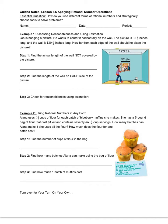Our first example, we're going to look at assessing reasonableness and using estimation. John is hanging a picture. He wants to center it horizontally on the wall. The picture is 32½ inches long and the wall is 120¾ inches long. How far from each edge of the wall should he place the picture? We can see in this picture that he wants it centered, and we know the dimensions of both, so we need to find the length of the wall that's not covered by the picture — here and here.